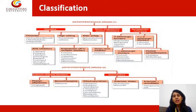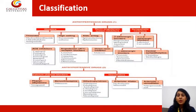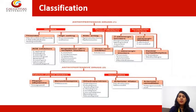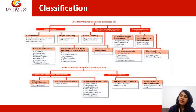The drugs which come under dihydropyridines are nifedipine, felodipine, amlodipine, lacidipine, lercanidipine, and nicardipine — various drugs with the suffix '-pine' (P-I-N-E). The non-dihydropyridines are further classified into two types: phenylalkylamines and benzothiazepines.